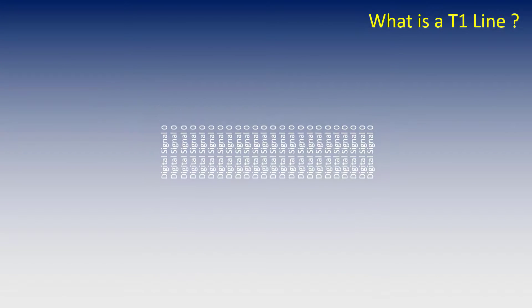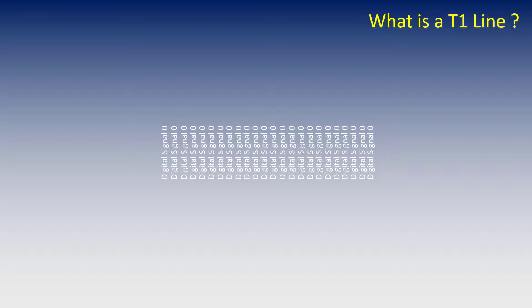So that the receiving end knows the beginning of each stream, a framing bit is added to the sequence. We now have a complete frame.